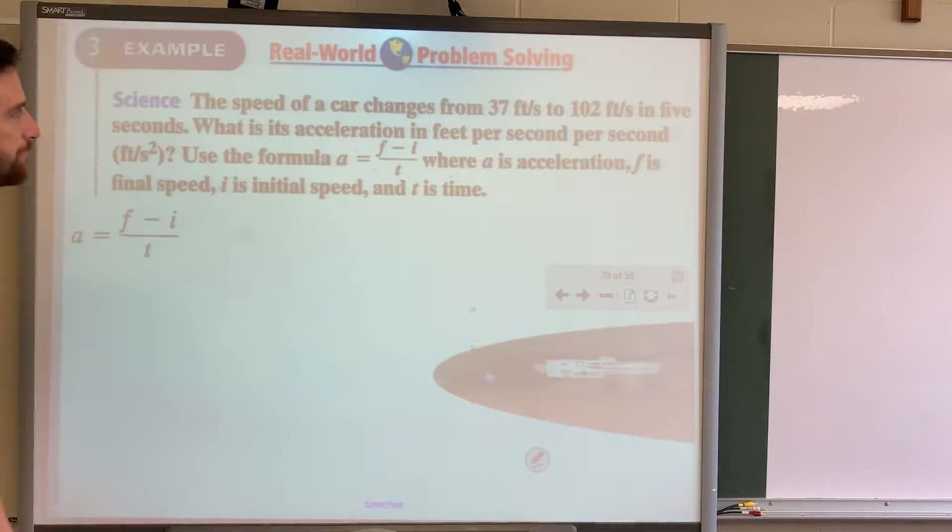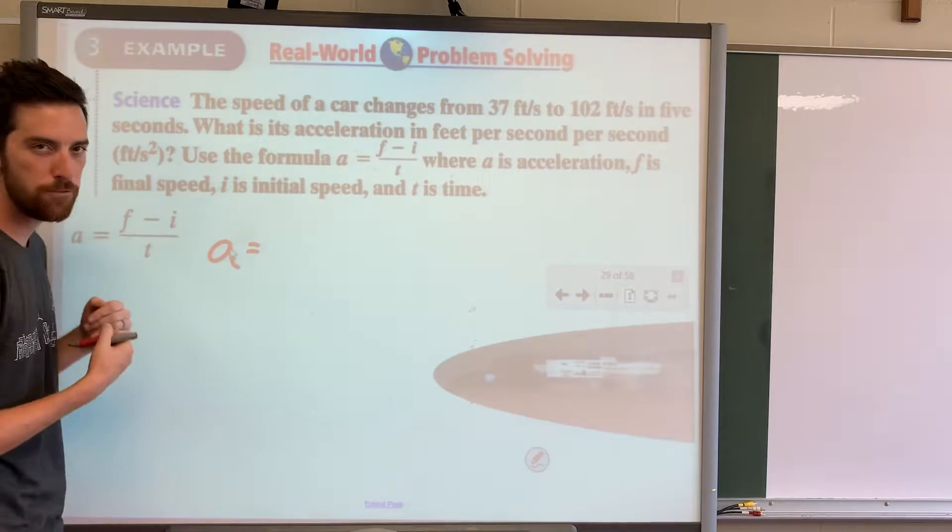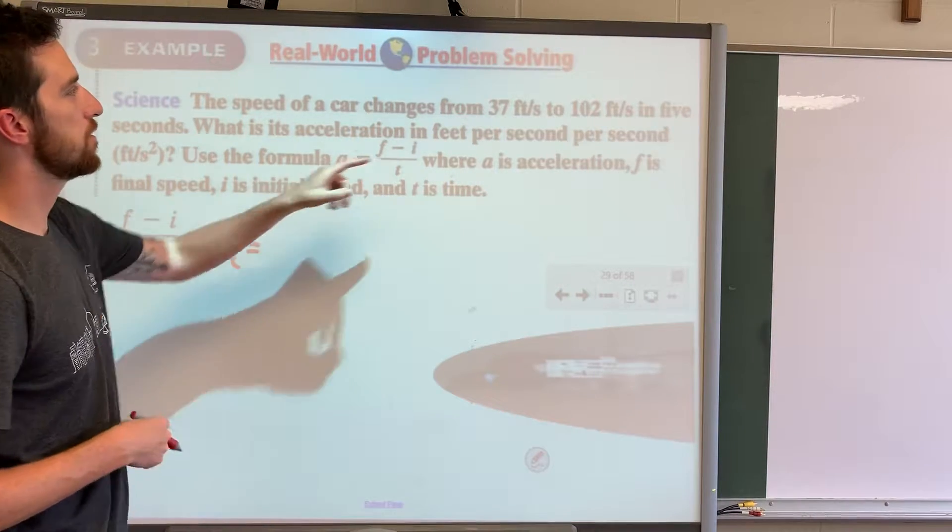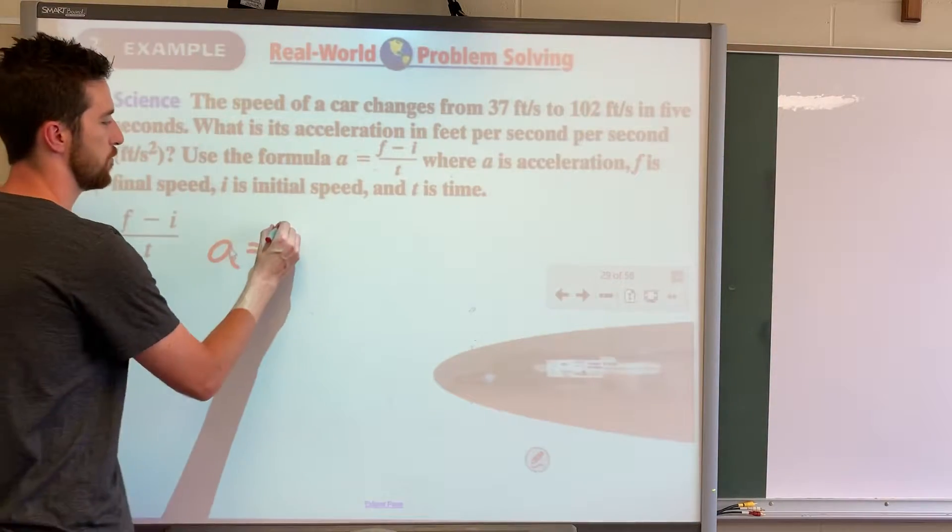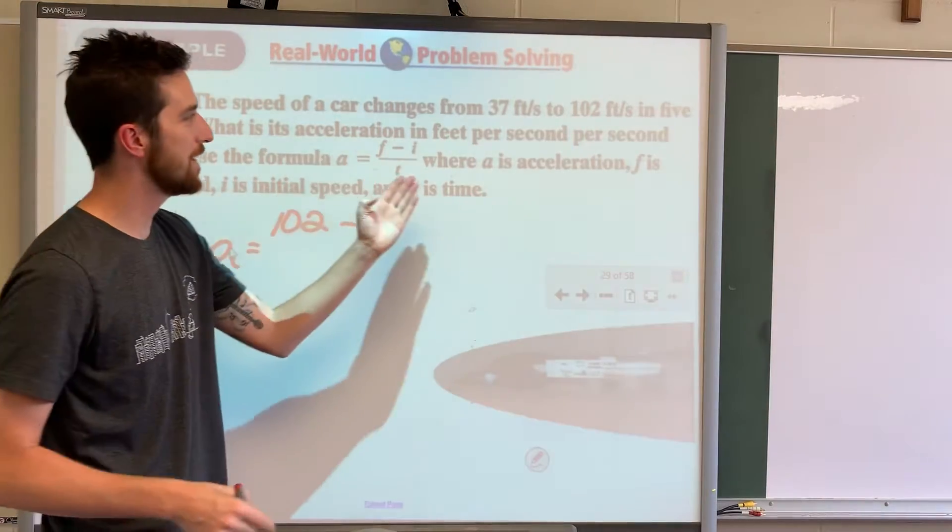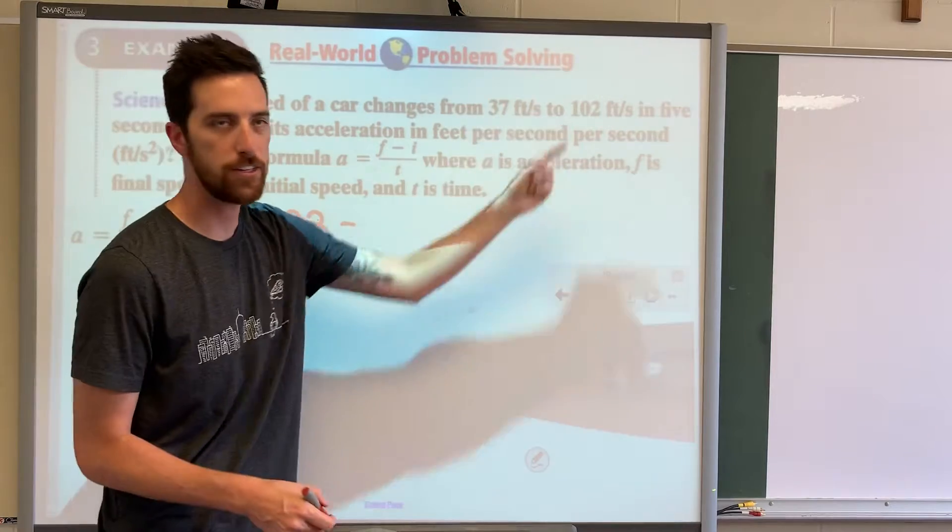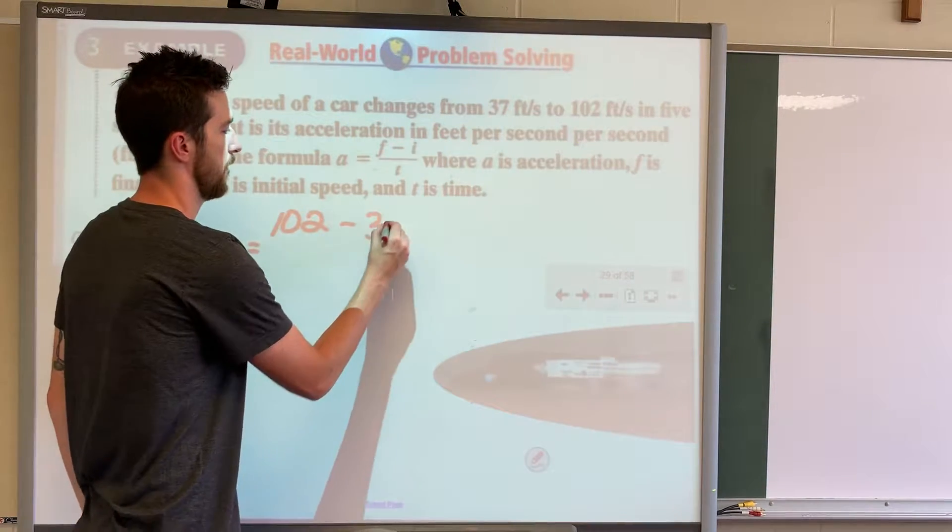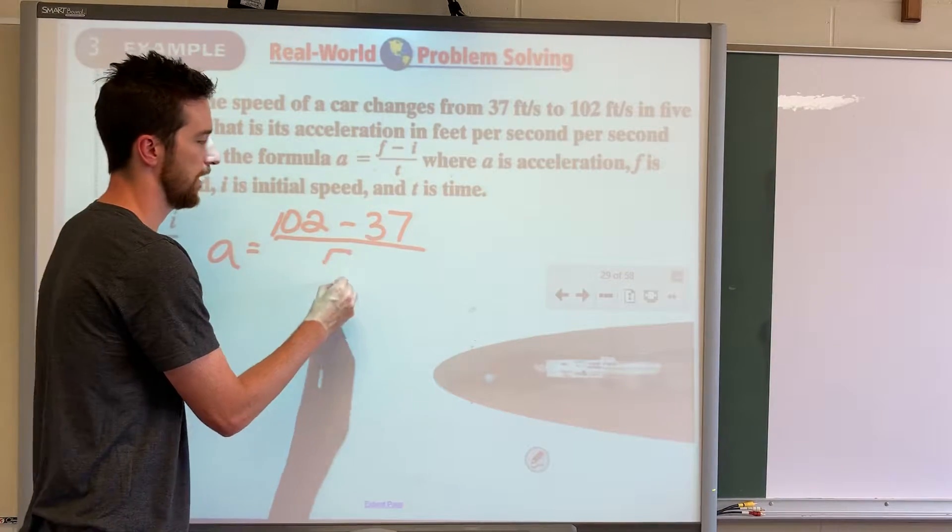So let's fill in what we know. We're looking for the acceleration, and it said F was the final speed. It went from 37 to 102, so 102 is going to be the final speed, minus I, which was the initial speed. So it's starting at 37 feet per second, divided by T, which is time, and that was five seconds.